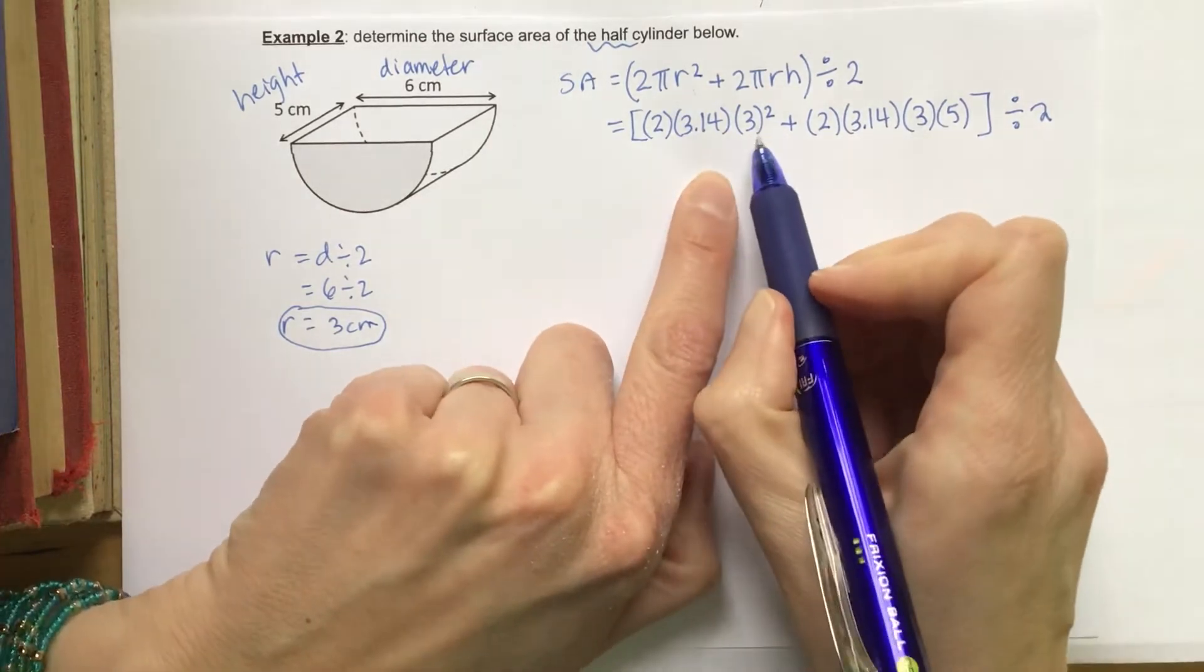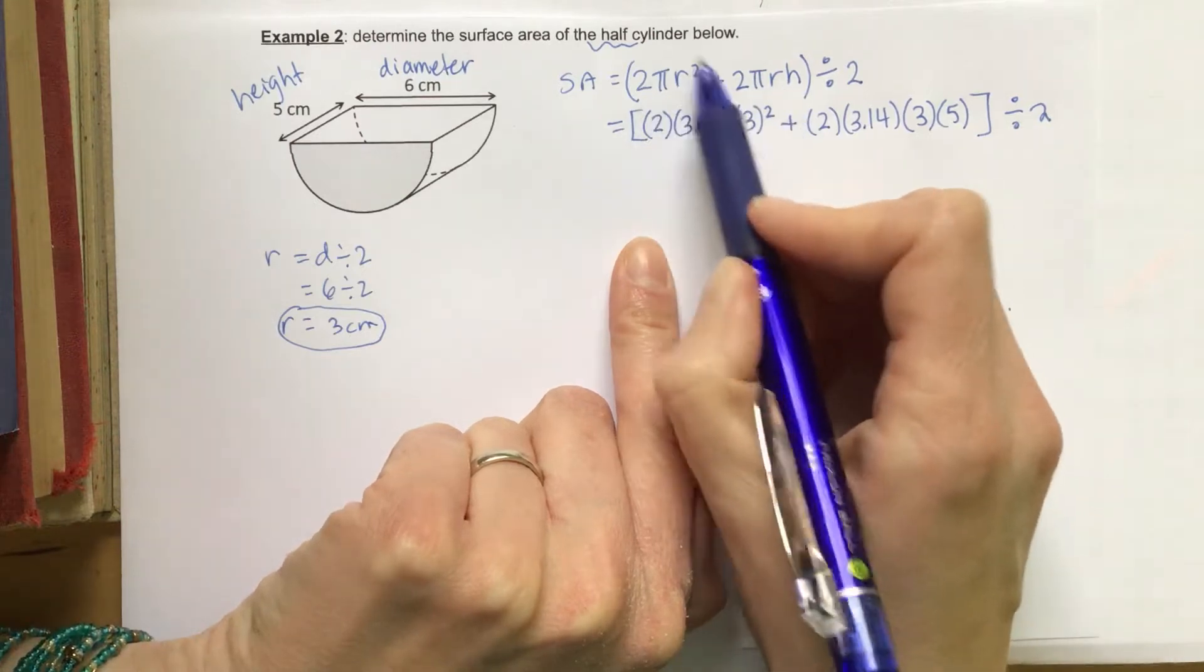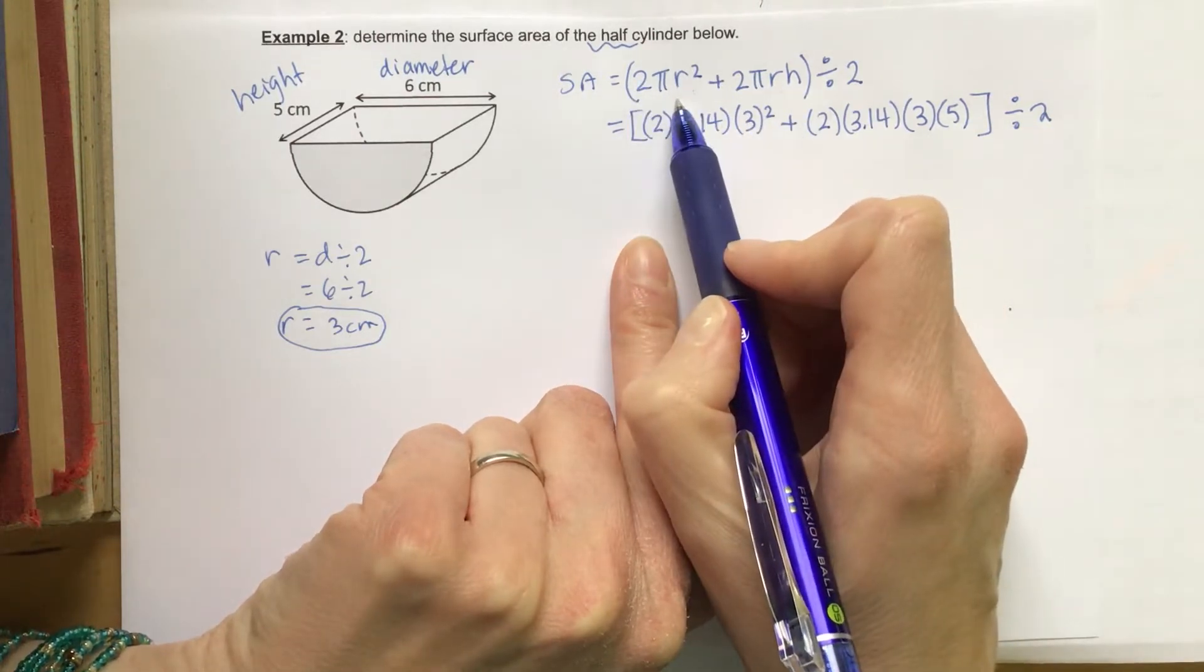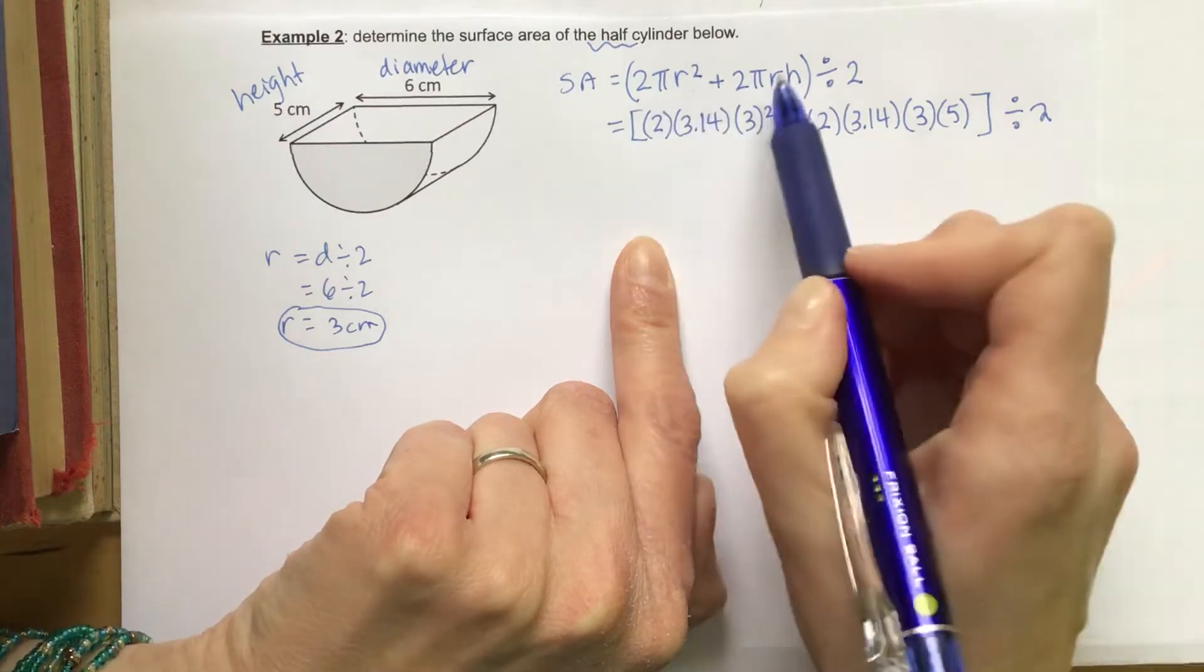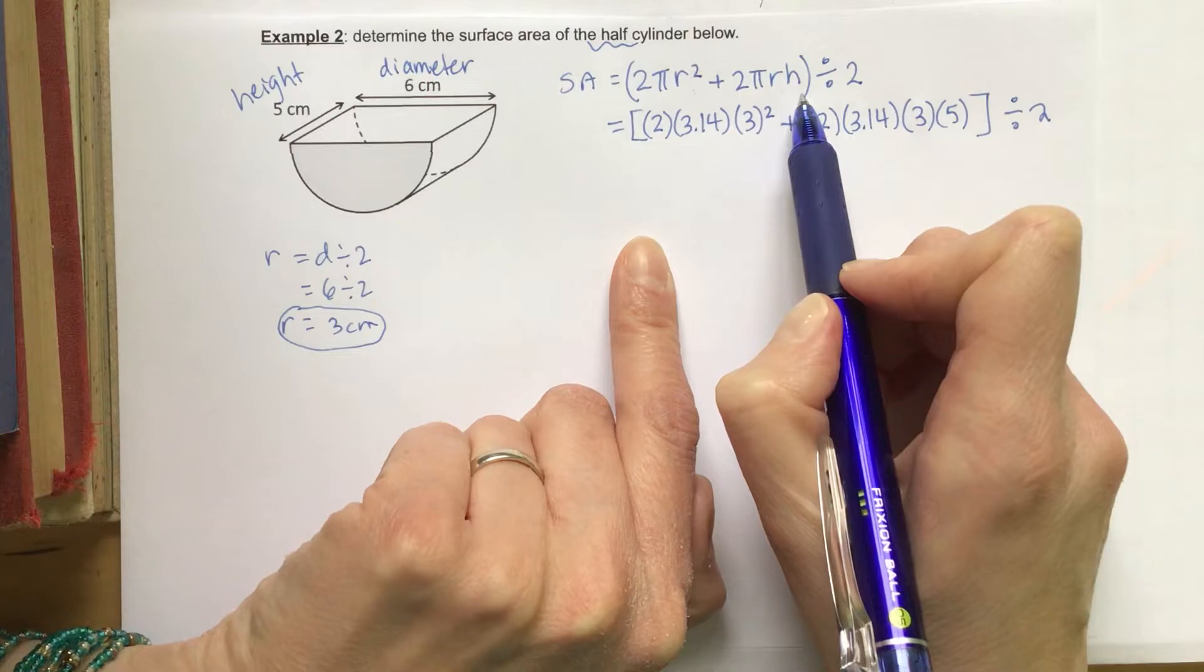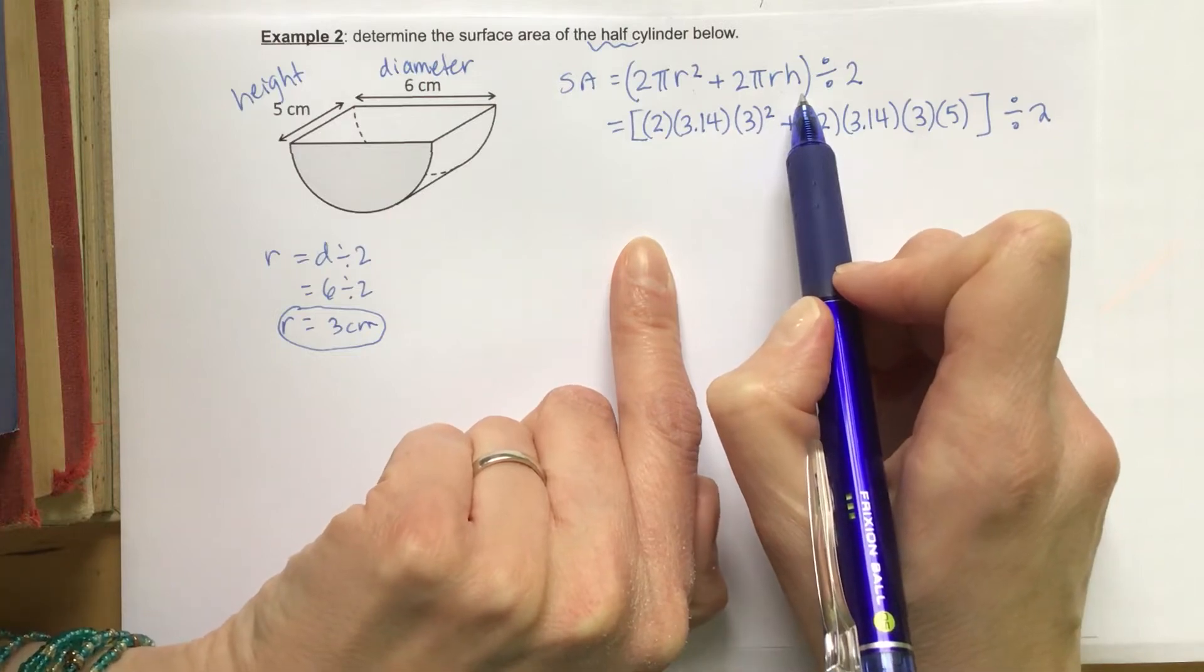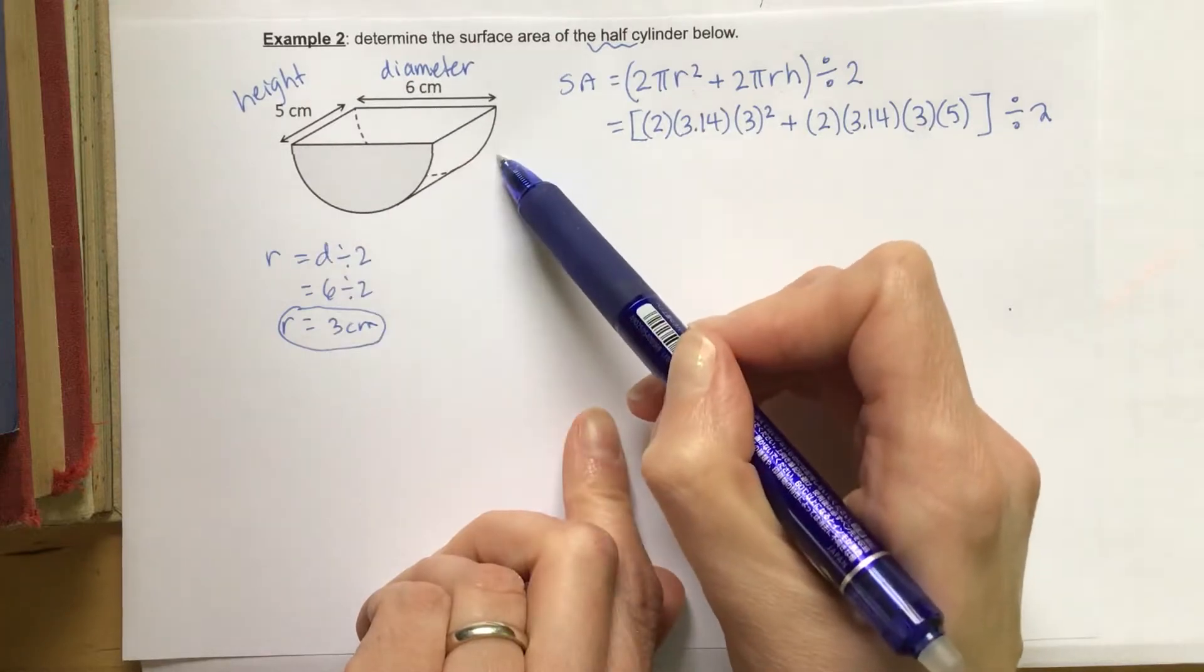So what I just want to point out here are the different parts of the formula. So this 2 pi r squared, that would usually take care of the two circles on the end of the cylinder. And then here, this is the lateral area, so the sides of the cylinder. But right now, we only need half of all of that, as you can see from over here.